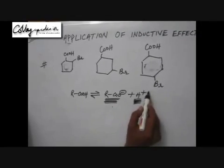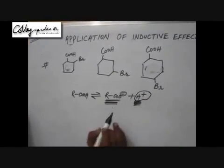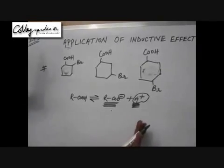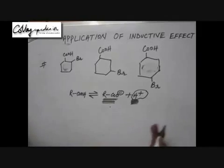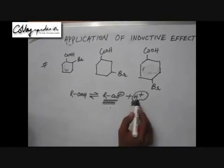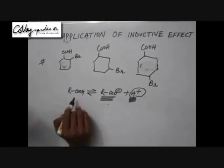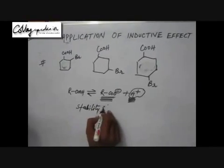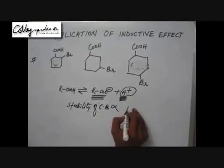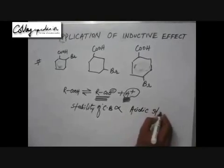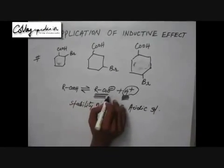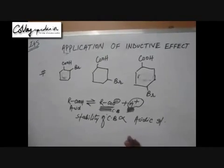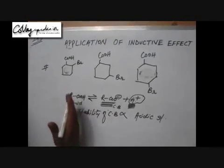Different acids will have different intermediates, and the H+ will be the same for all. So we compare the stability of these conjugate bases — if a more stable intermediate is formed, the reaction tends to move forward. The more the reaction goes forward, the more ionization occurs and the greater the amount of H+ produced for the same amount of acid. The simple rule is: stability of conjugate base is directly proportional to acidic strength. The more stable the conjugate base, the greater the acidic strength of the acid.